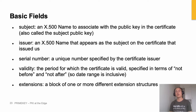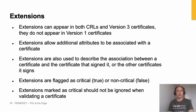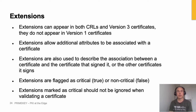The big difference between the version one and version three formats is that in version three you can also use something called certificate extensions, which allow you to add additional data to the certificate. Extensions can appear in both certificates and certificate revocation lists, but they don't appear in version one certificates because extensions weren't invented back then. They allow additional attributes to be associated with the certificate — for example, who issued the certificate, under what policy it was issued, and what the public key can be used for.